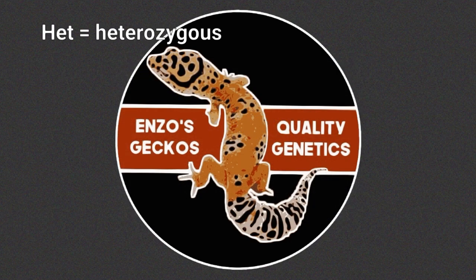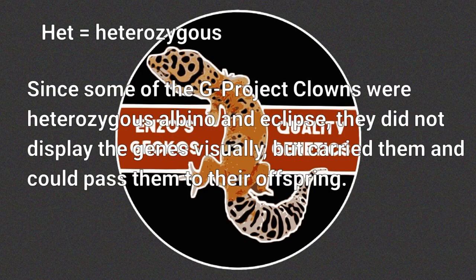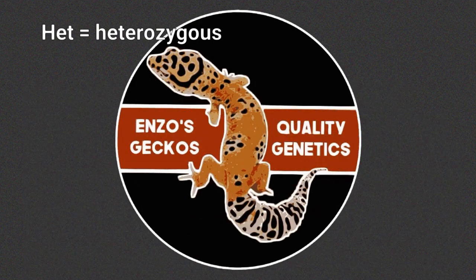Het stands for heterozygous, which basically means that an animal carries a recessive gene like Eclipse or Tremper albino without actually visually showing it. By looking at a gecko, there's no way to tell, and the only way to figure out if it is truly heterozygous for a recessive gene is to test it out — which he did.